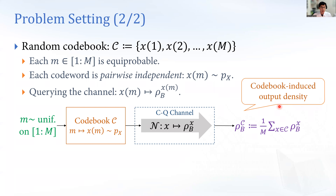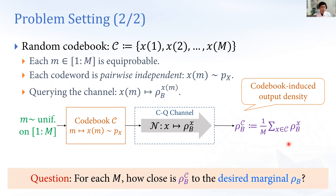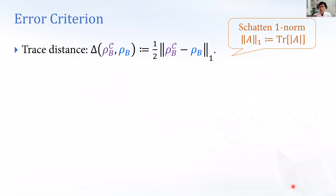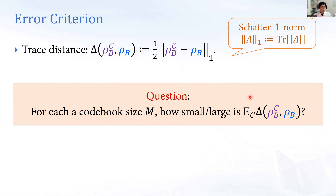At the channel output, we make a mixture of those density operators — we call this the codebook-induced output density ρ_B^C. Given each M — the size of the codebook — we want to ask how close is ρ_B^C, the codebook-induced output density, to the desired true marginal density ρ_B. Because ρ_B given C is itself a random variable (we consider a random codebook containing M random codewords), we take expectation. The question becomes: for each codebook size M, how small is the expected trace distance, where expectation is taken over the random codebook?